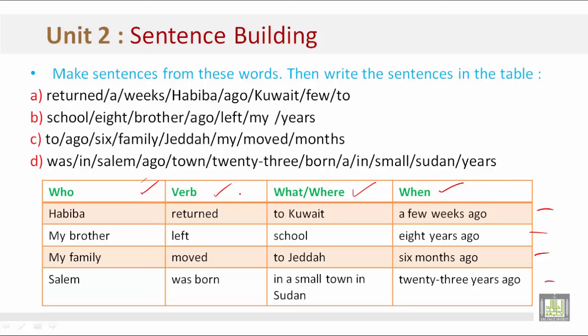We then move on to the verb — returned, left, moved, was born. Next is what and where — such as to Kuwait, school, to Jeddah, in a small town in Sudan. And we end the sentence with when — such as a few weeks ago, eight years ago, six months ago, and 23 years ago.